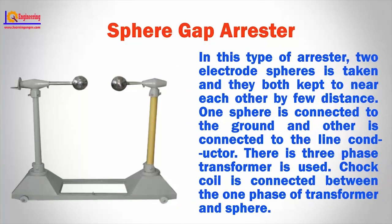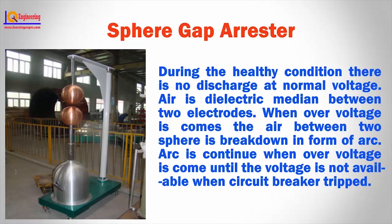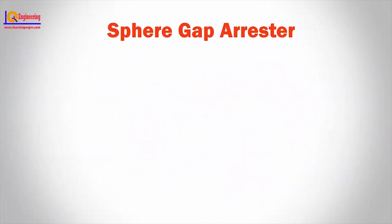Spare gap arrester. In this type of arrester, two electrode spares are taken and kept near each other with a small distance. One spare is connected to the ground and the other is connected to the line conductor. A three-phase transformer is used. A choke coil is connected between one phase of the transformer and the spare. During healthy condition, there is no discharge at normal voltage. Air is the dielectric medium between the two electrode rods. Whenever overvoltage occurs, the air between the two spares breaks down in the form of an arc. The arc continues when overvoltage is present until the voltage is removed when the circuit breaker trips.